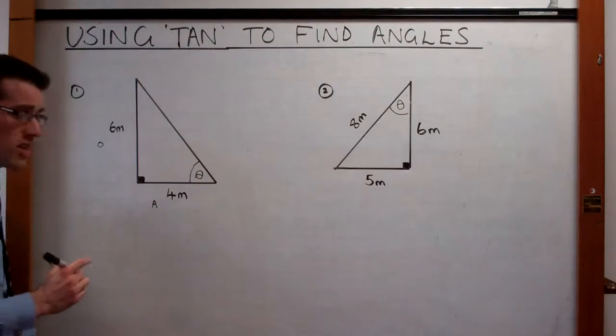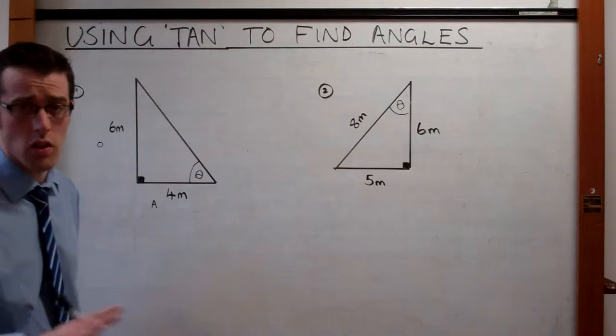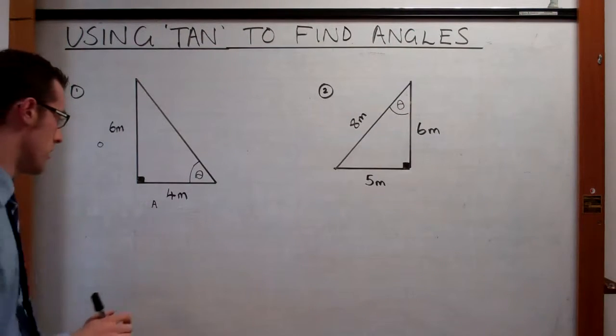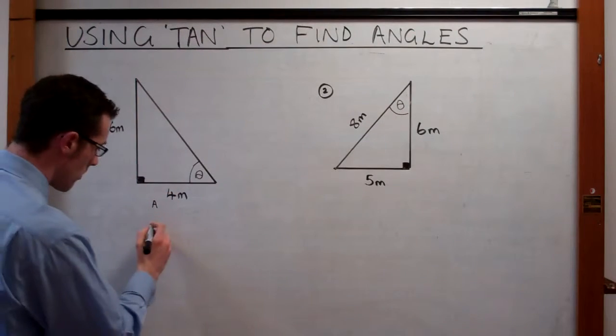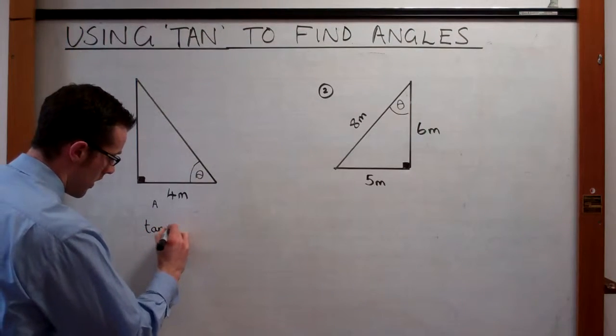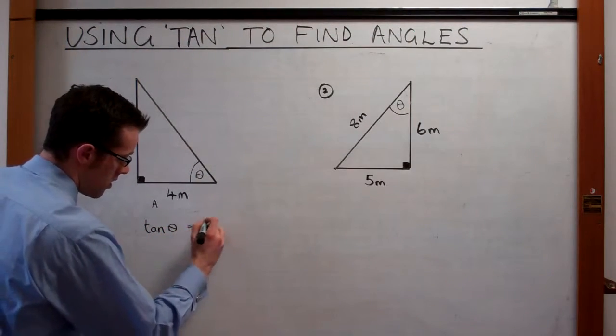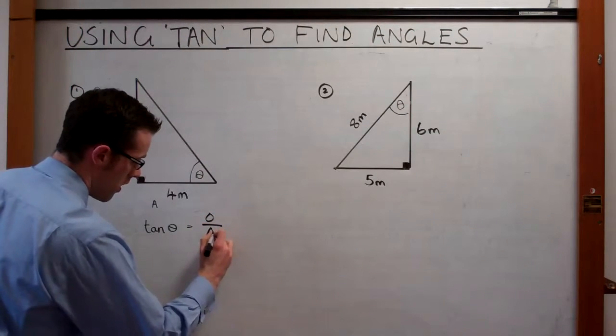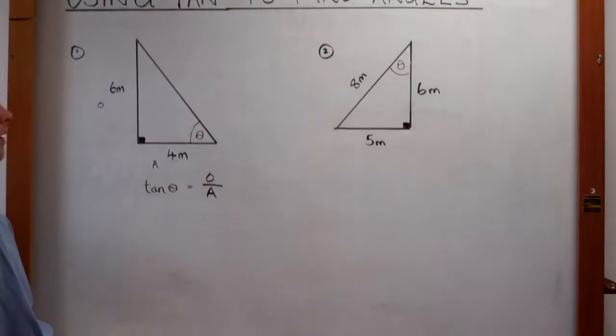Now, this is very important when we're choosing between sin, cos, and tan, which we'll see later on. But first of all, if we write out our general formula: tan theta is equal to the opposite over the adjacent.